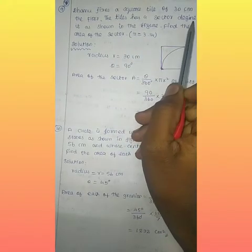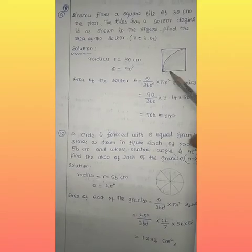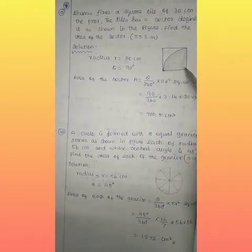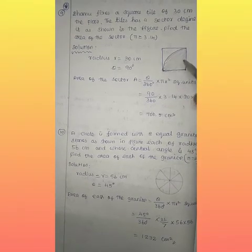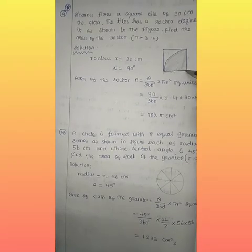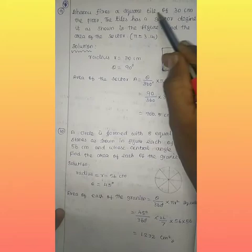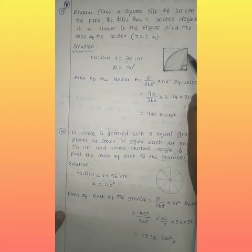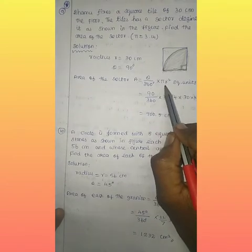The tiles have a sector design on its zone, as shown in the figure. The design area is a sector. We can see the radius of this area — the radius is 30cm and the angle is 90 degrees. The area of the sector formula is: Area = (Theta / 360) × π × r².